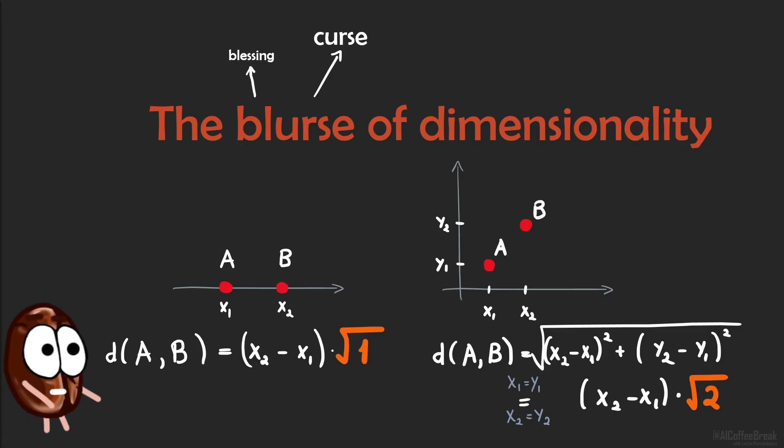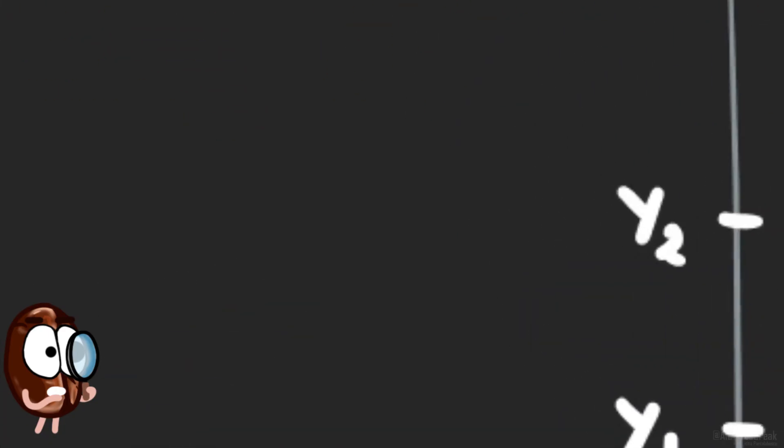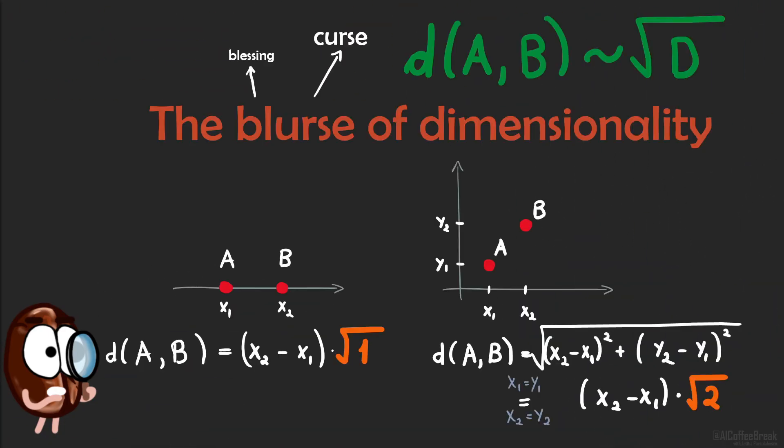And here we generalize, without delivering the proof now, that the distance between such points A and B is proportional to the square root of the number of dimensions D. What does this mean? Well, it means that in a high number of dimensions, there is a lot of space to begin with.